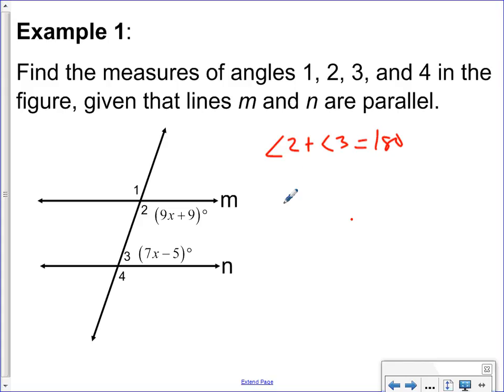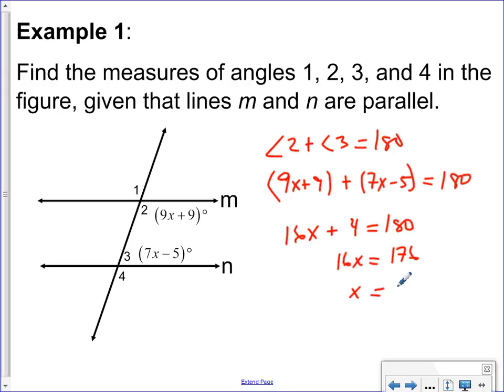Just plugging everything in. Nine X plus nine plus seven X minus five is equal to 180. Nine X and the seven X can go together. You get 16X plus four equals 180. 16X equals 176, and divide by 16. X is 11.